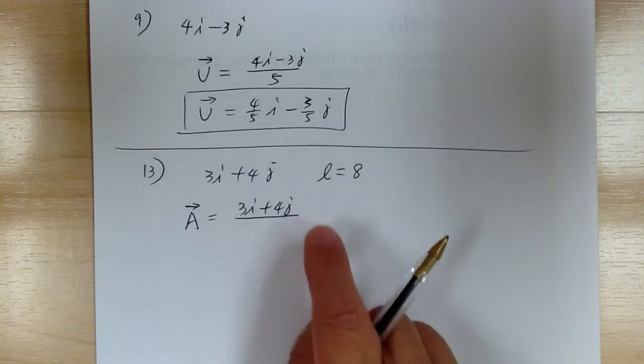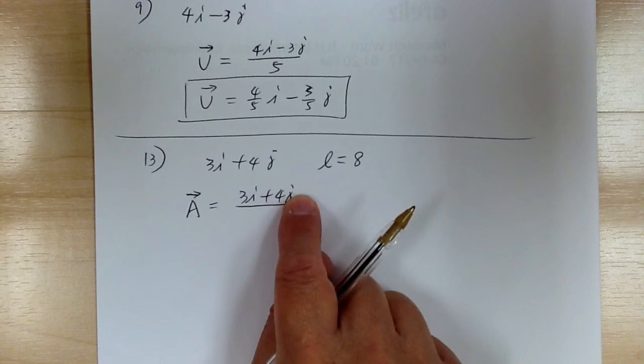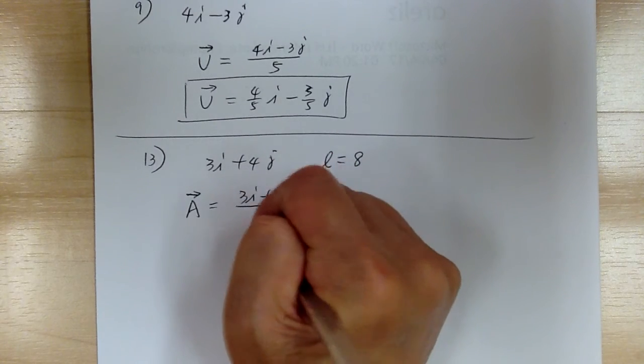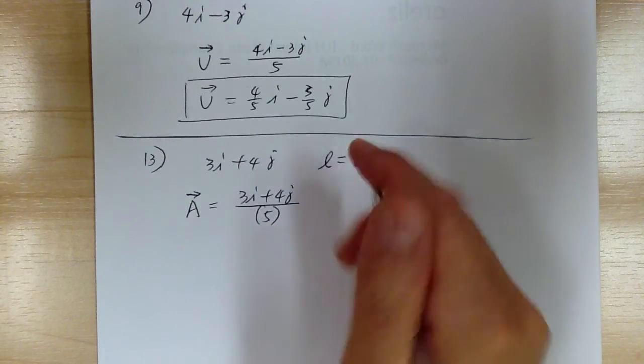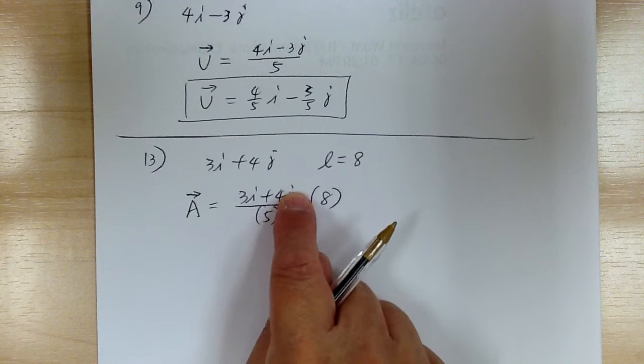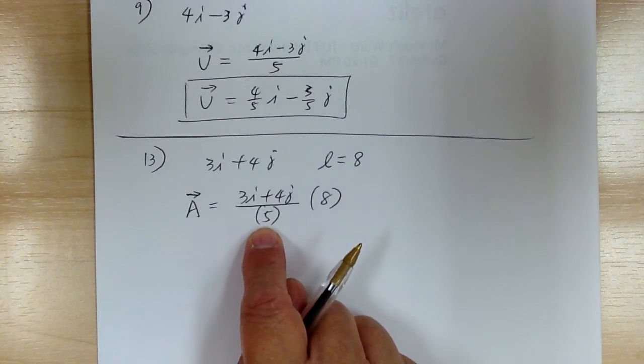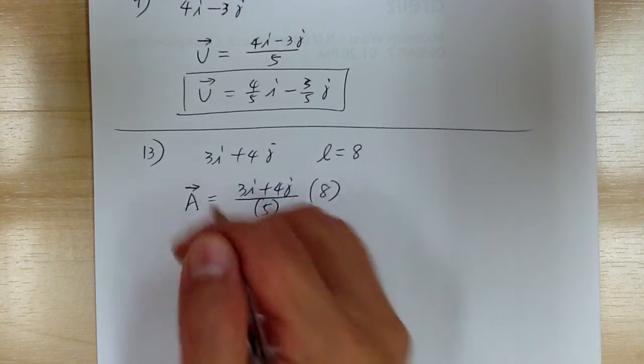So right now you have this vector with correct direction. Now divide by 5. So now this is length of 1. So now from length of 1 to 8, you times it by 8. So again, first get the direction correct, then get to the length of 1, and then from length of 1 you can go to any length that you want. So times by 8 to get a length of 8.